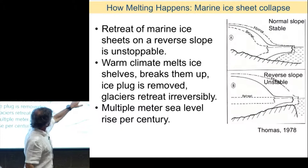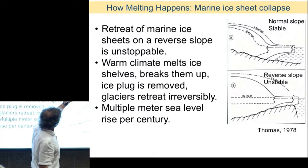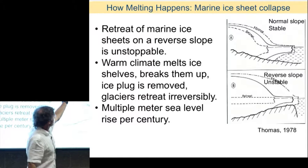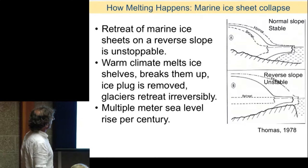If the ice sheet grows on a normal bed — going uphill toward the interior — that's a stable configuration. If the ice starts retreating and you change the climate, it will stop and re-advance. These are the nice ones. The dangerous ones are these dangerous ice streams. What's happening to the Antarctic is driven a lot — we found that out over the last 20 years — by what's happening to the ocean.